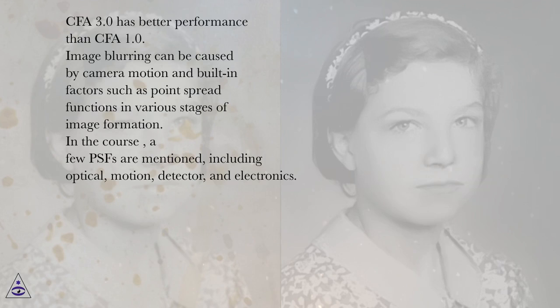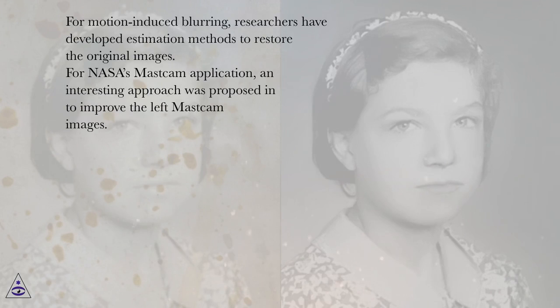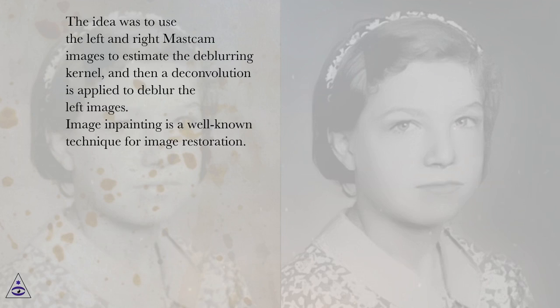Image blurring can be caused by camera motion and built-in factors such as point spread functions in various stages of image formation. PSFs mentioned include optical, motion, detector, and electronics. For motion-induced blurring, researchers have developed estimation methods to restore original images. For NASA's MassCam application, an interesting approach uses the left and right MassCam images to estimate the de-blurring kernel, and then a deconvolution is applied to de-blur the left images.